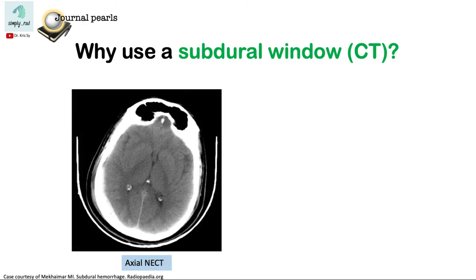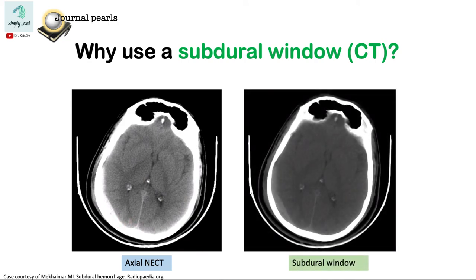So why do we use a subdural window? So this is an example of an image in the brain window. In this region, this is something suspicious. Switching to the subdural window, now we are more convinced that there is something going on here.